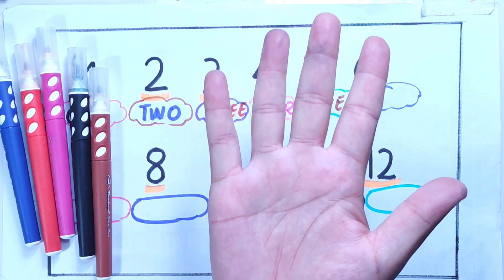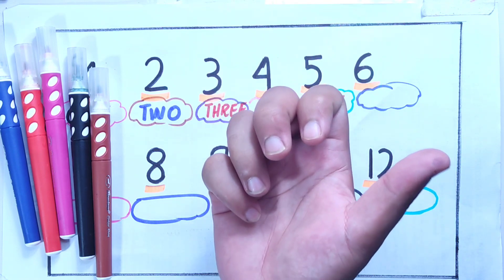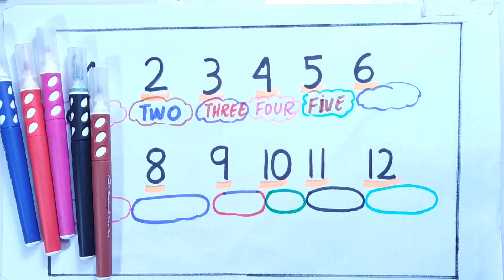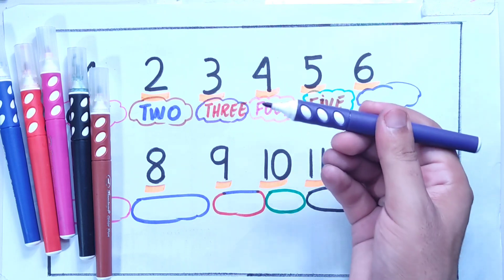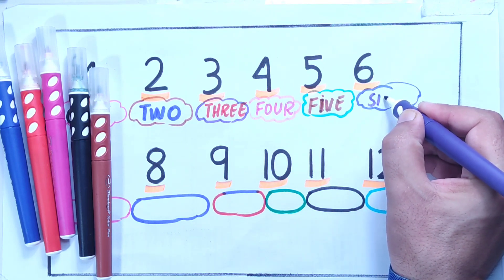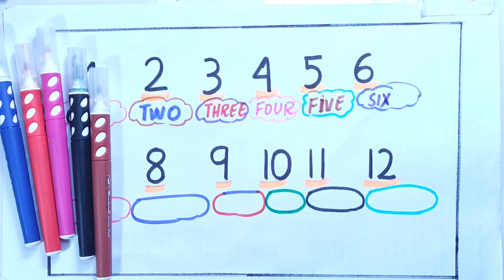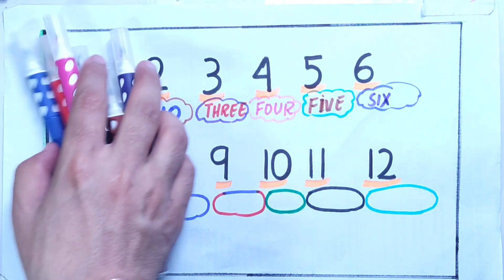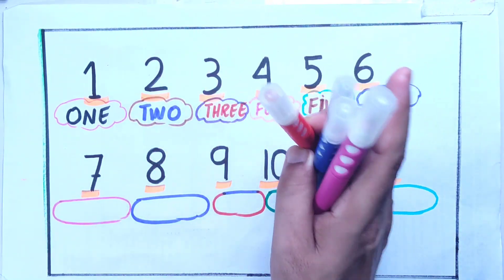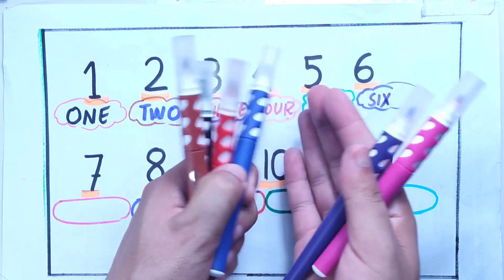Now this is violet color. Six: S-I-X, six. Now these are six, you can again count, one, two, three, four, five, six.